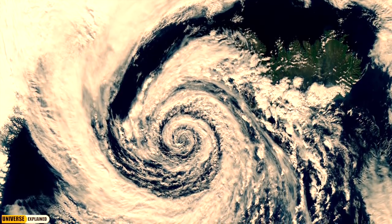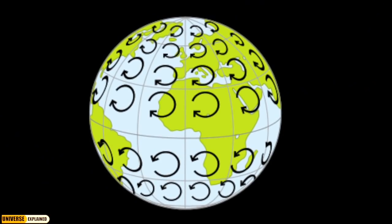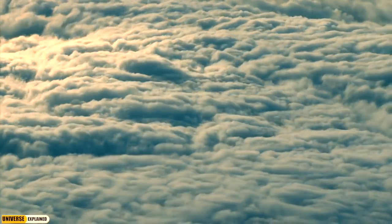Coriolis effect transfers the spin of the Earth into the motions of winds around a weather pattern. This would cause the jet stream to reverse,